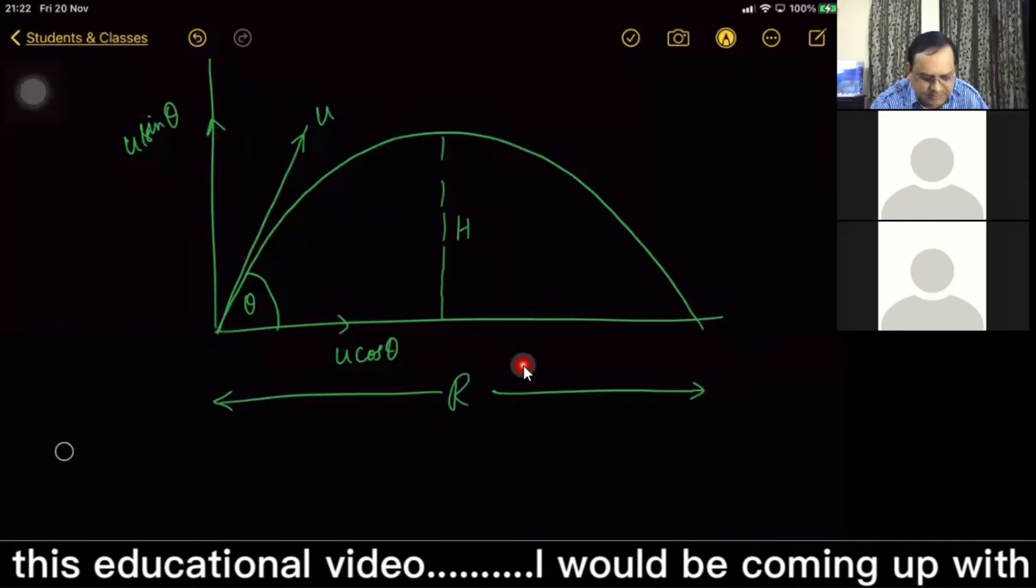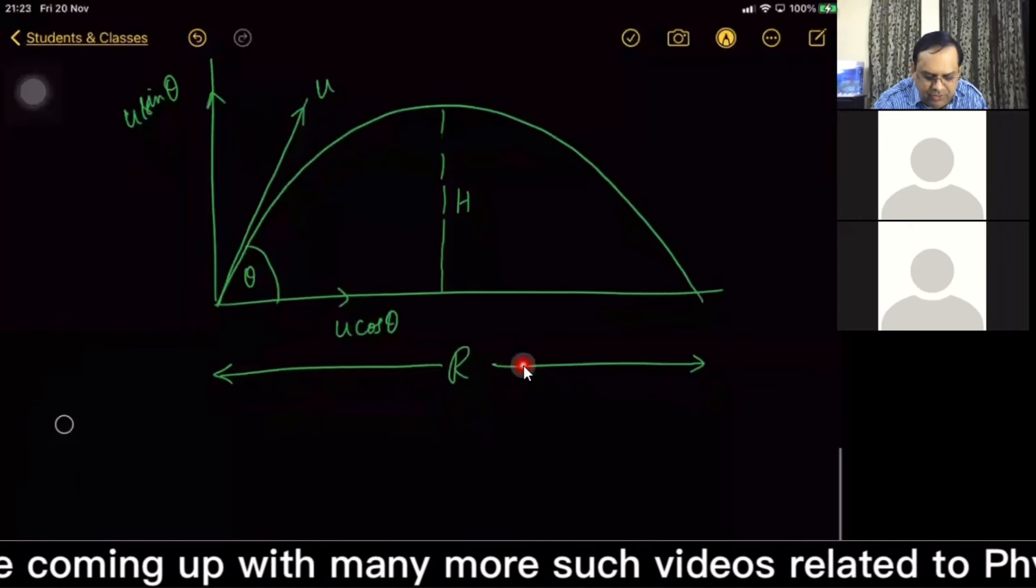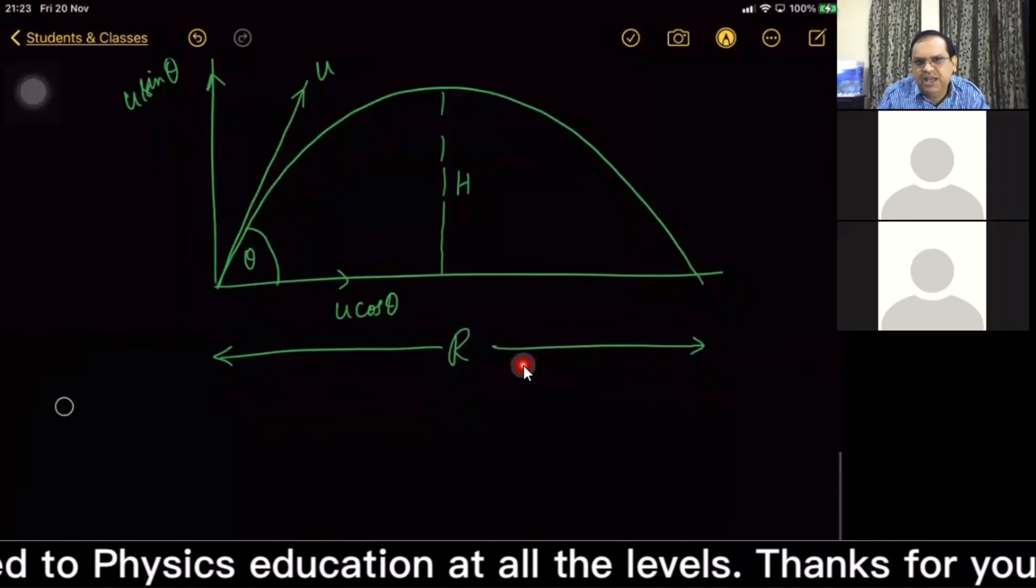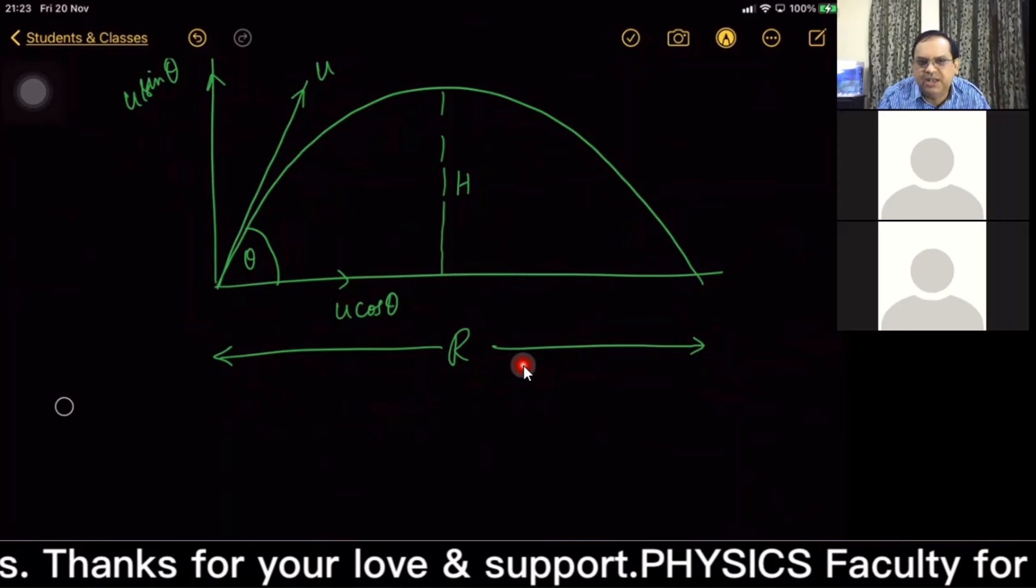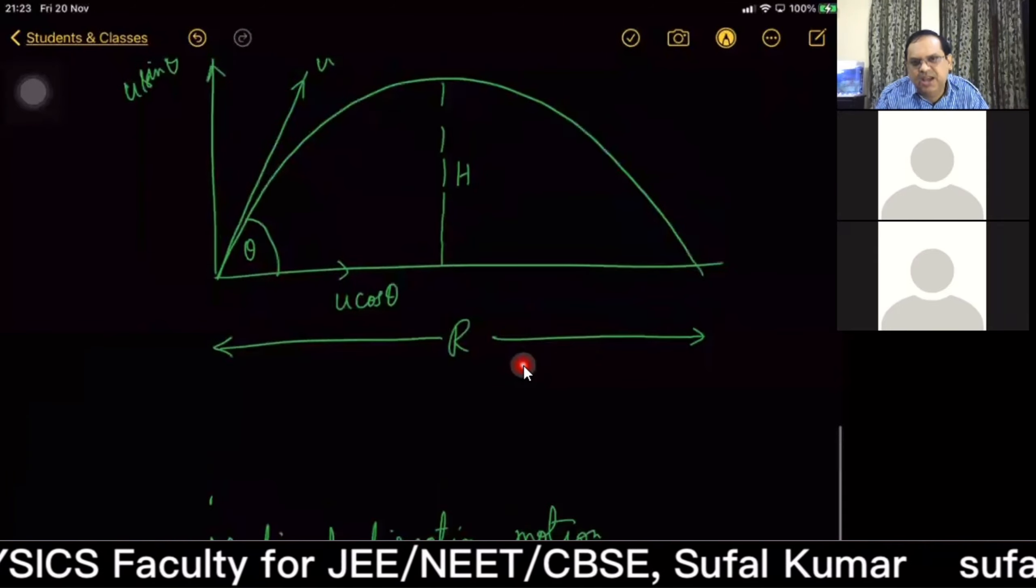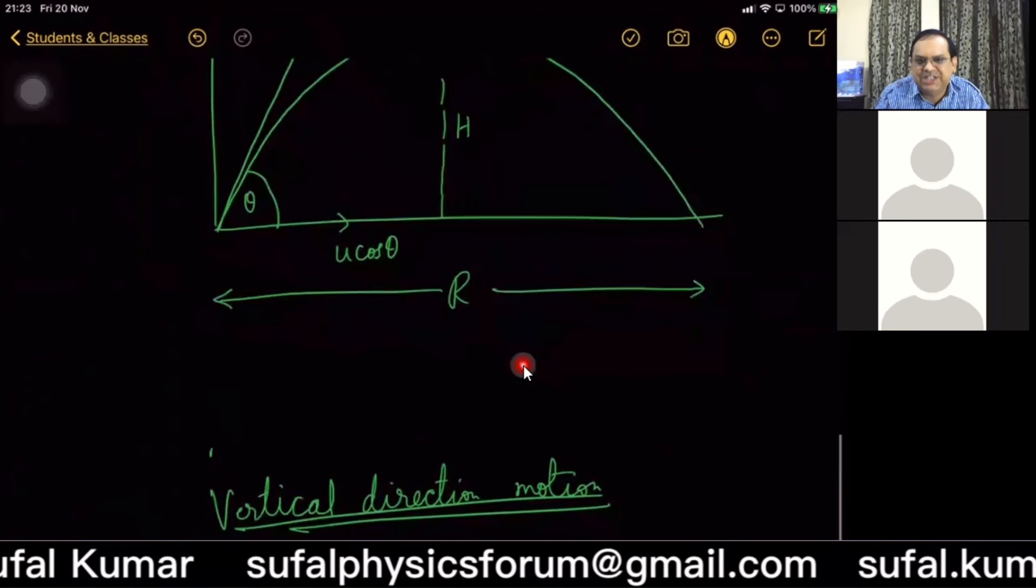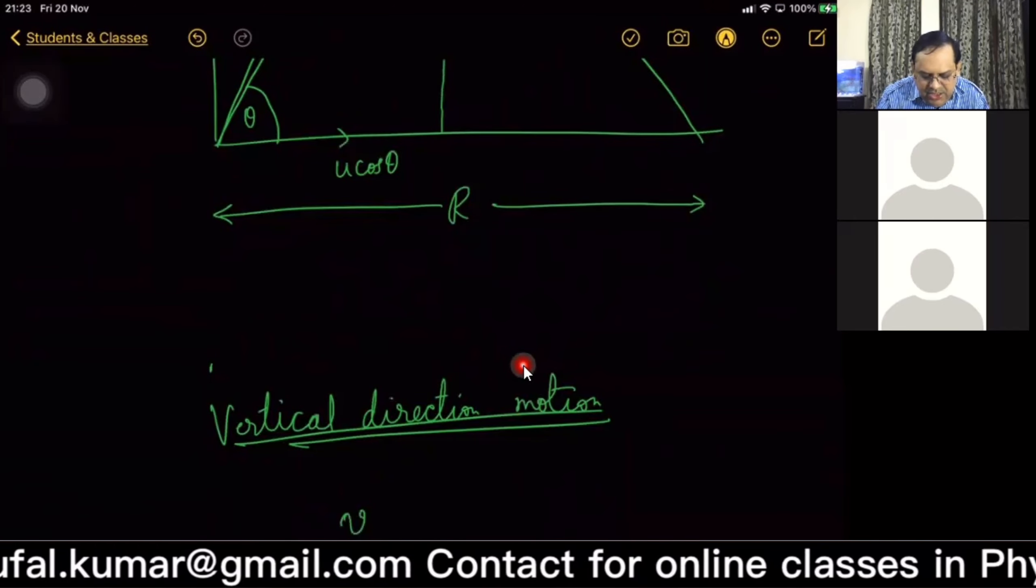Now, if we consider maximum vertical height position and vertical velocity, konsa equation apply karen? v = u - gt. Can we use this v = u? v_y = u_y - gt.